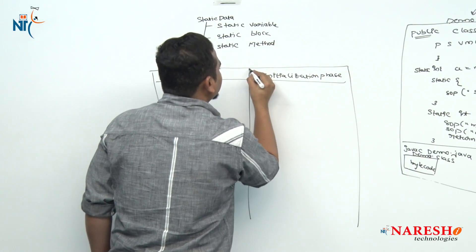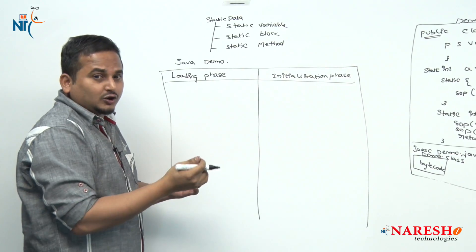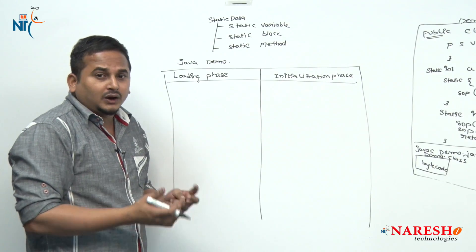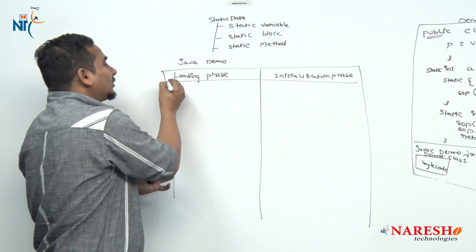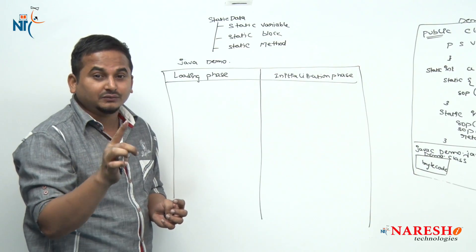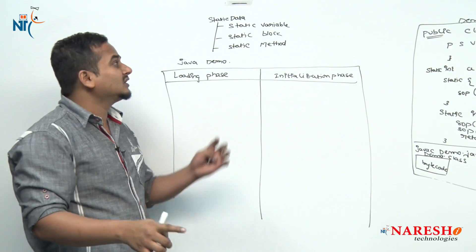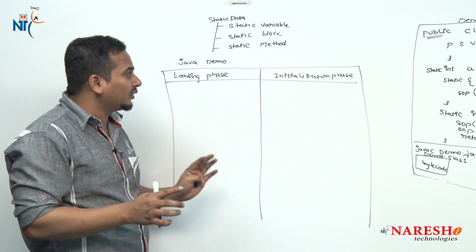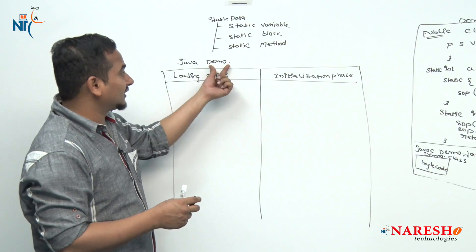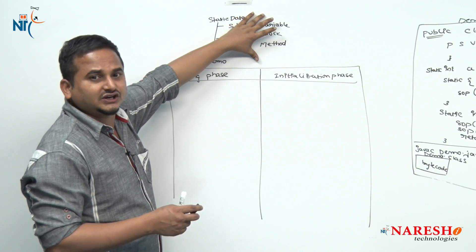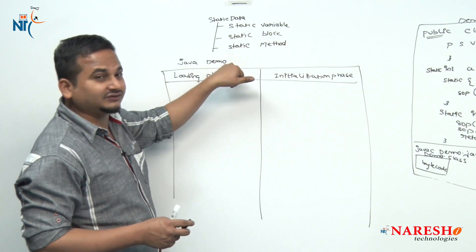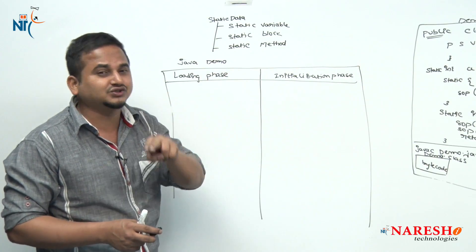Whenever the .class file is being loaded by the JVM, these two phases are going to happen. How many times is the .class file loaded by the JVM? Exactly one time. That means all the static data is going to be loaded and initialized exactly one time. Whenever we load the .class file like Demo, all the static variables, blocks, and methods are going to be loaded and initialized — and how many times? Exactly one time, by whom? JVM.